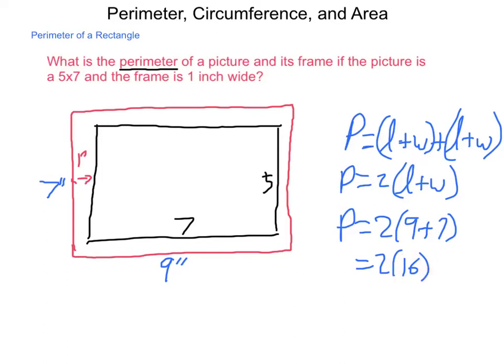But continuing on, 2 times 16 is 32. So this picture frame and the picture inside of it have a total perimeter of 32 inches.